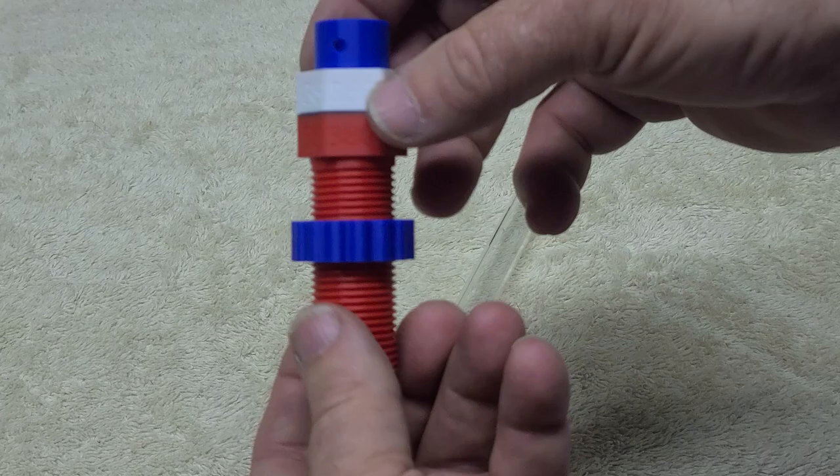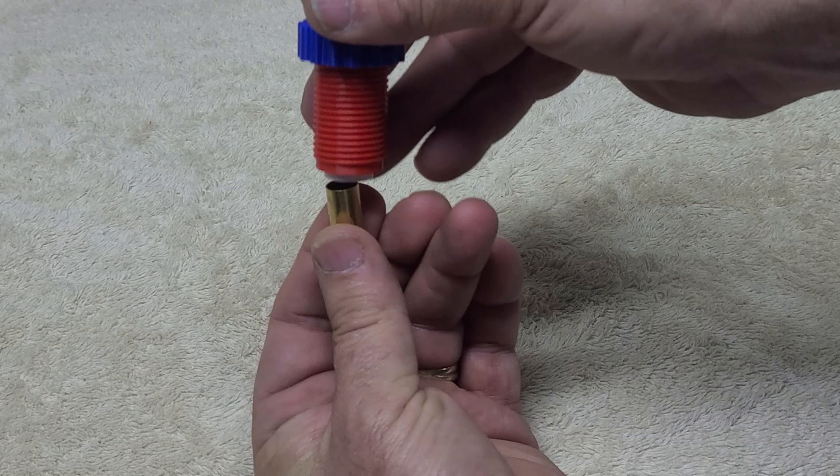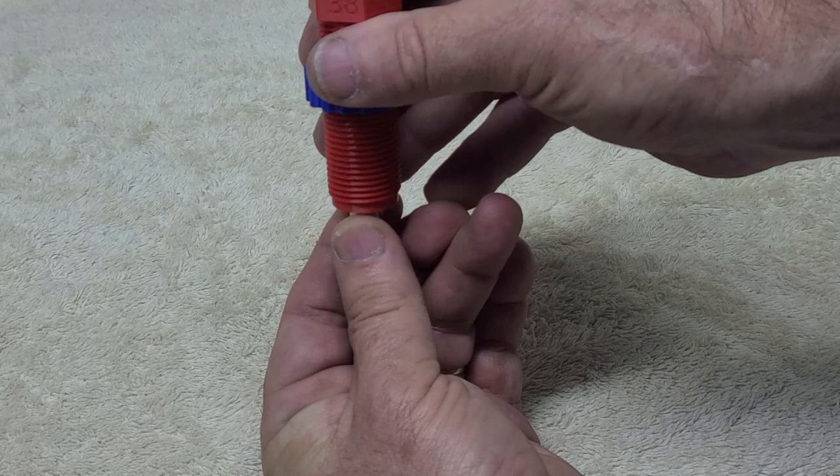Then you load your bullets in. This would obviously be in the stage after you drop powder and probably at the same time you put a little flare on the case. But as the bullets go in they drop out.